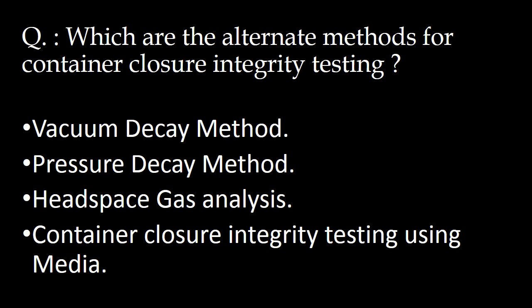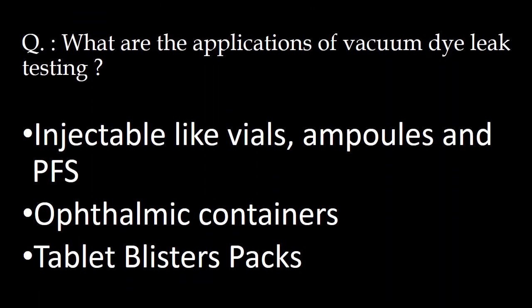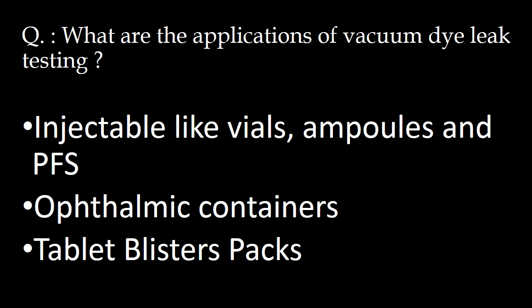Next question: which are the alternate methods for container closure integrity testing? There are four alternate methods: first, vacuum decay method; second, pressure decay method; third, headspace gas analysis; and fourth, container closure integrity testing using media.